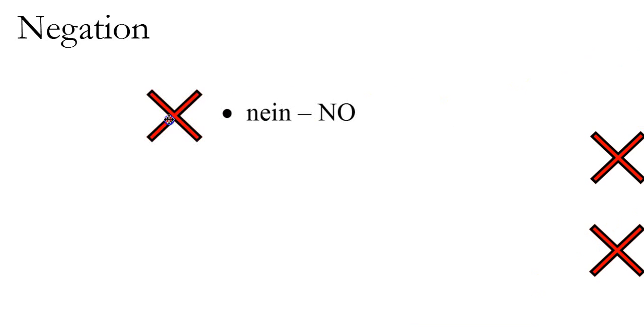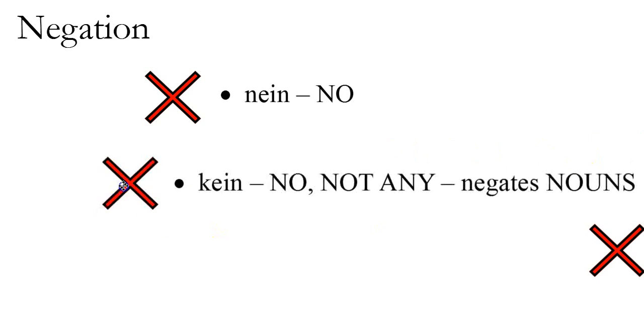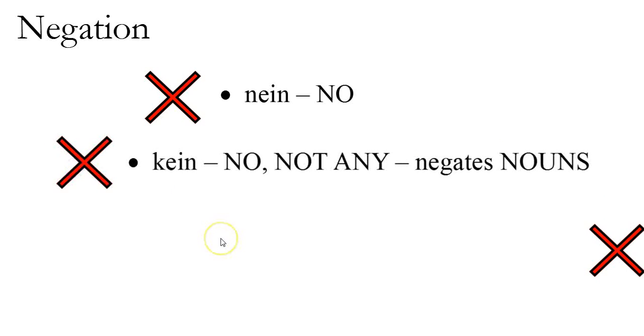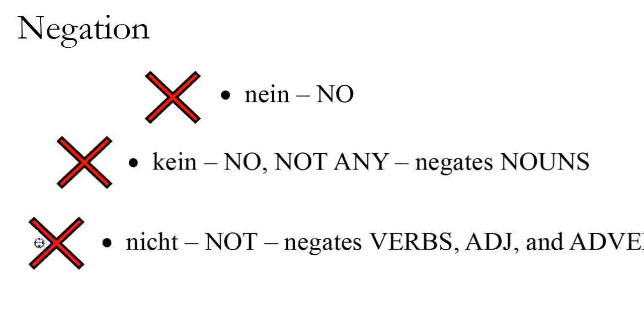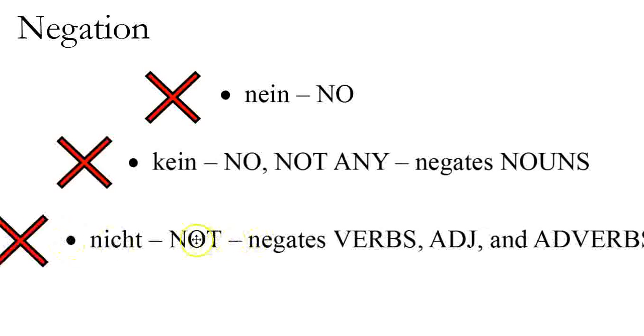In German there are three ways of saying no. There's nein, which means no. There's kein, which negates nouns. Like, I have no time, keine Zeit. I have no books, keine Bücher. Then we have nicht, which means not.